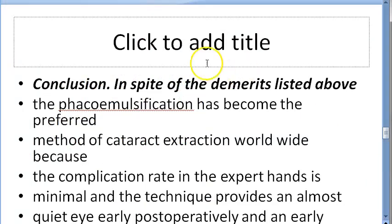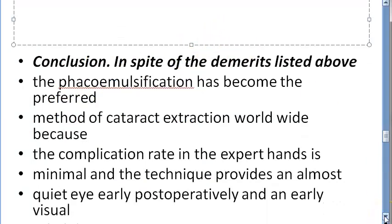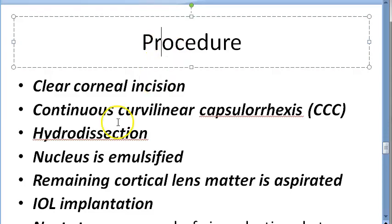In spite of these demerits, phacoemulsification has become the preferred method of cataract extraction because the complication rate in the hands of an expert surgeon is very low and visual rehabilitation is fast. Patients may prefer to pay more for a comfortable surgery and faster recovery.